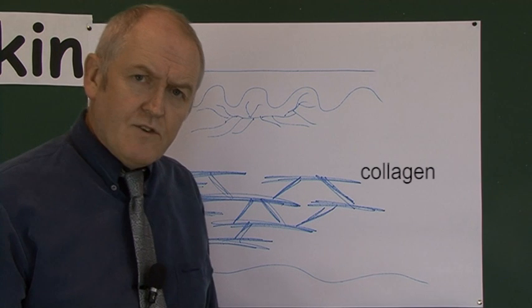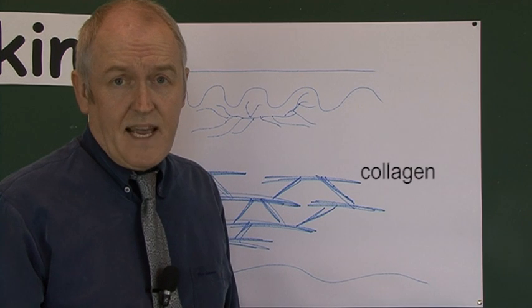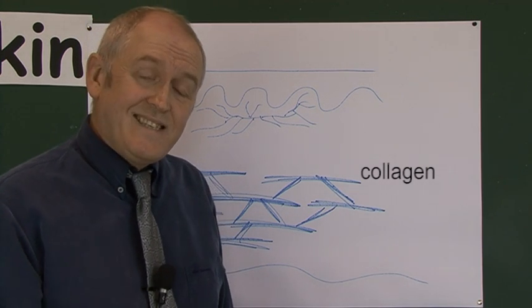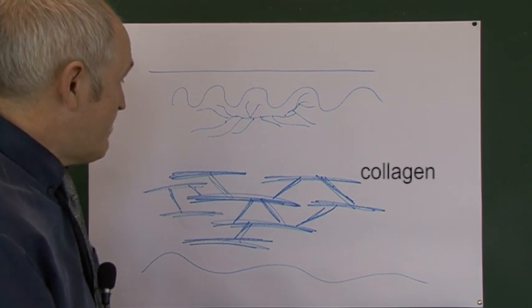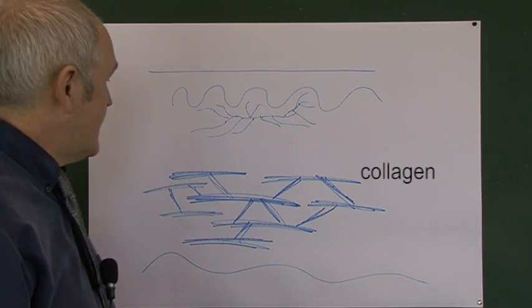And this is why leather is such a tough substance as well. When skin is tanned—cow hides or animal hides or whatever—what you're left with is mostly the collagen, and you get this tough leather as a result.